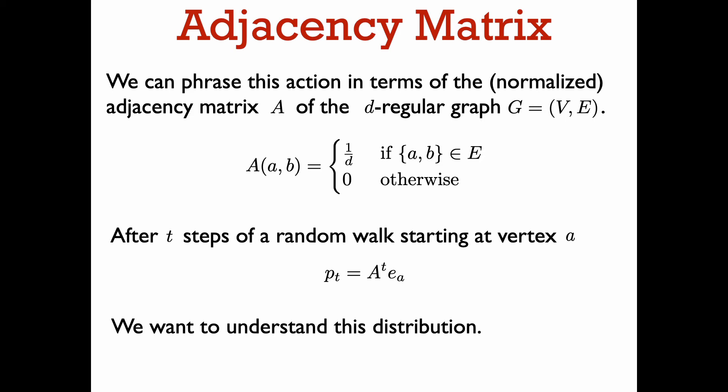This means that if our walk starts at vertex a, then after t steps of the random walk, our probability distribution over vertices will be given by A to the power t times e_a, where e_a is the standard basis vector corresponding to vertex a. This means that to understand the evolution of a random walk, we need to understand the behavior of A to the power t.